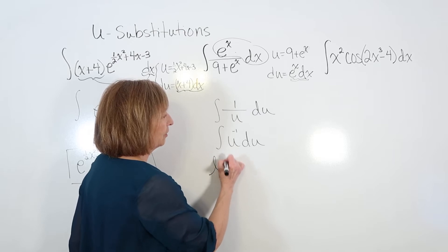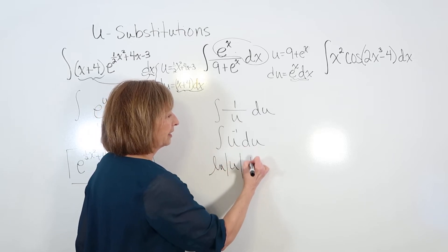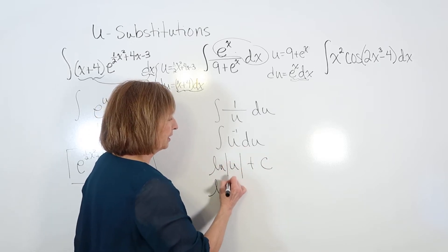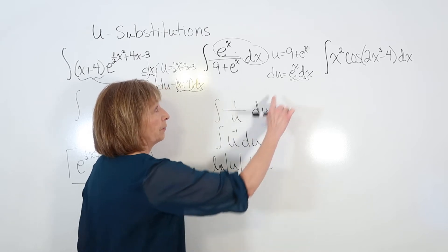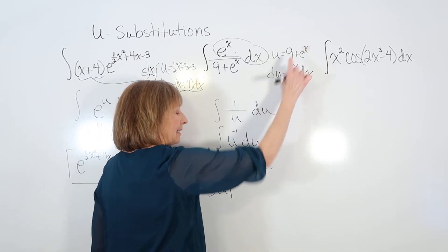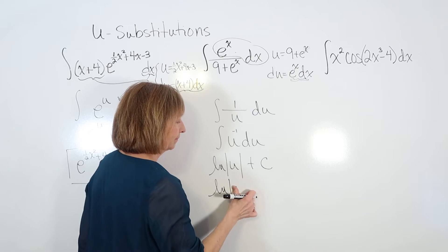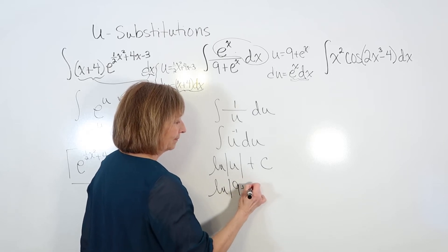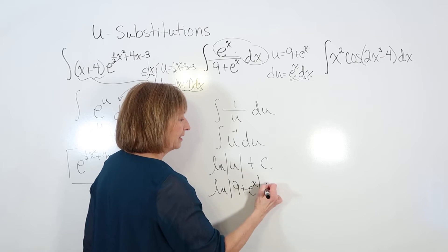So this is the natural log of the absolute value of u plus c. And then put your expression that u representing the 9 plus e^x plus c.